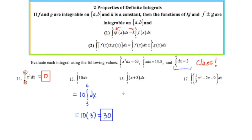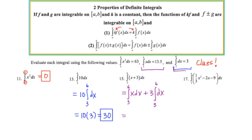Number 15: we have the definite integral of a multi-term expression, so I'm going to split this up into two separate definite integrals. I've broken this into two of my separate clues. The first one is the definite integral of x from 3 to 6, and the second part is going to be 3 times the definite integral of x dx.